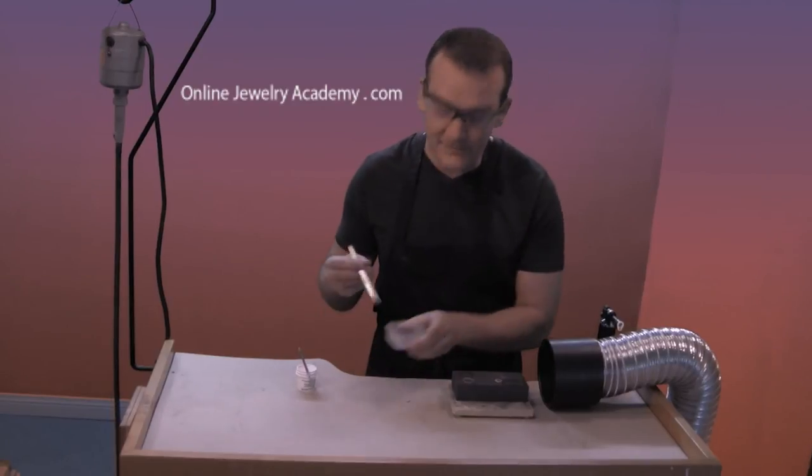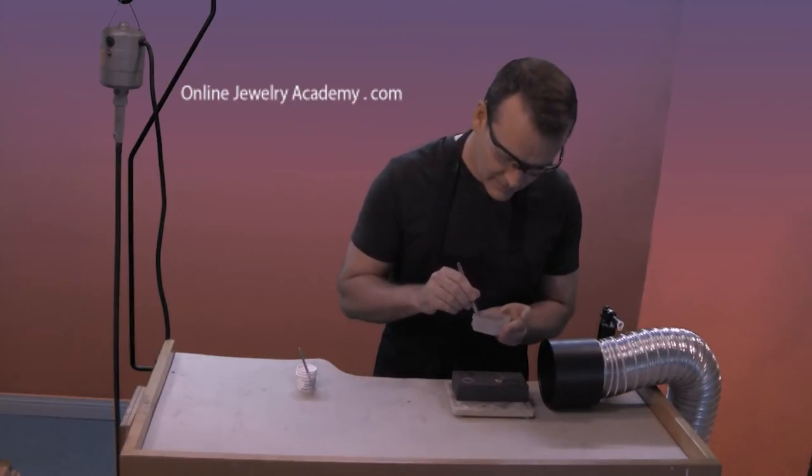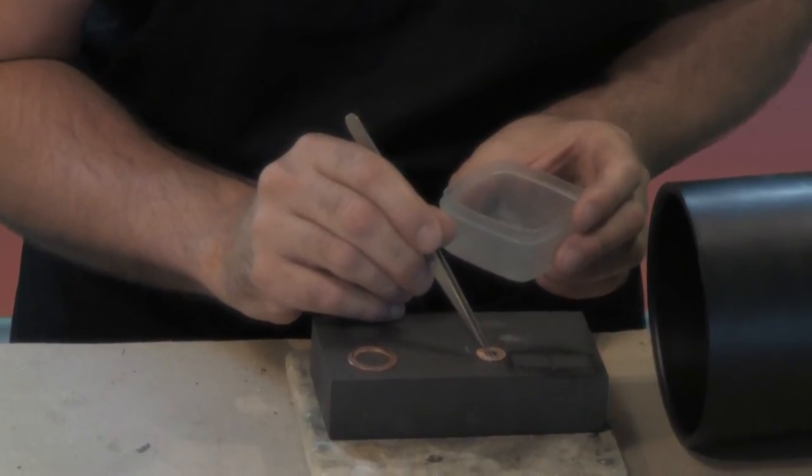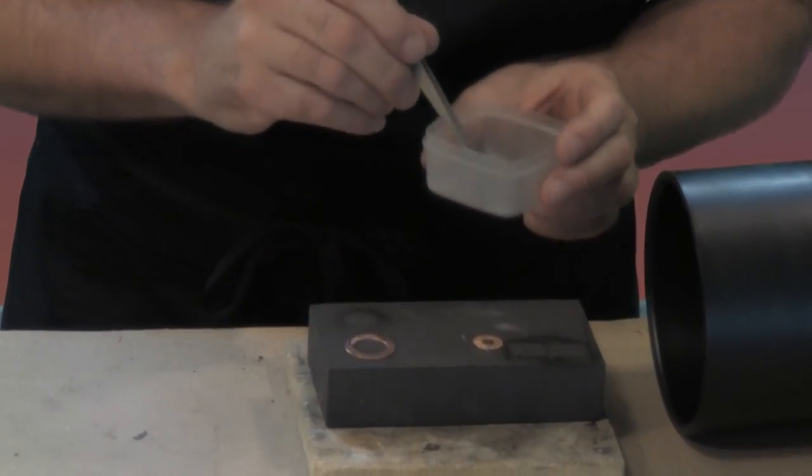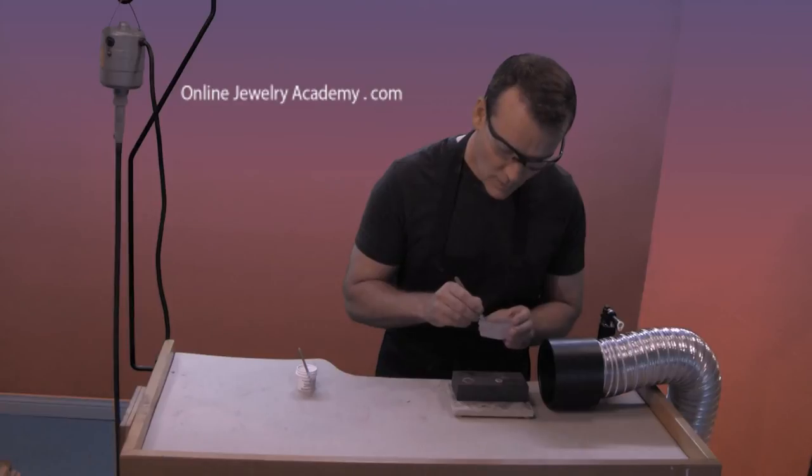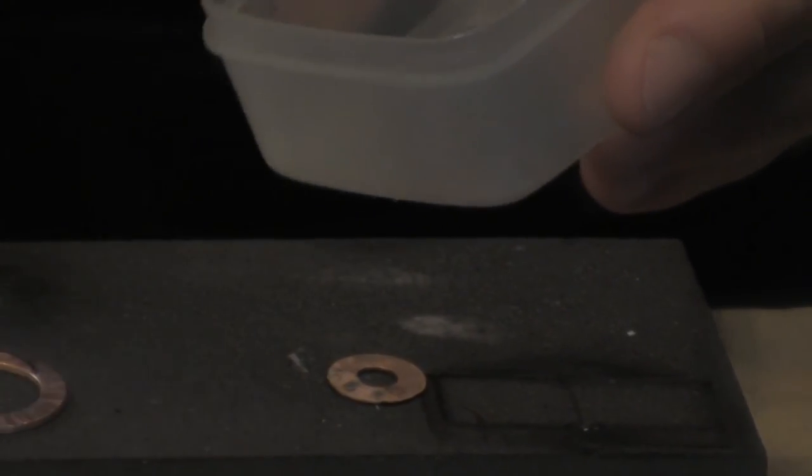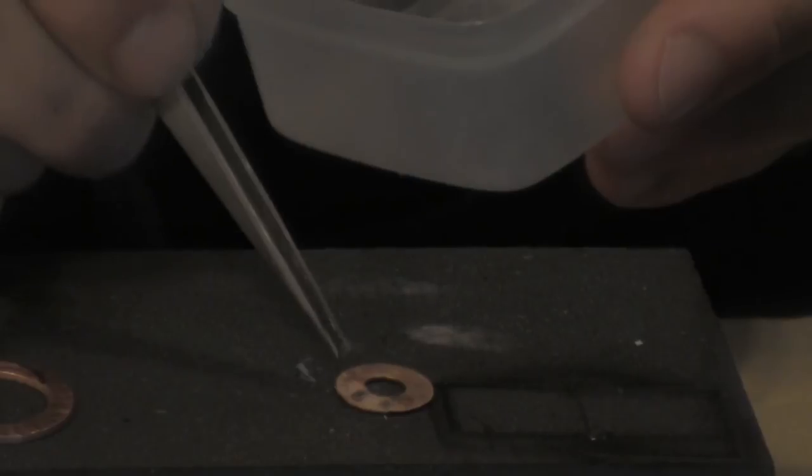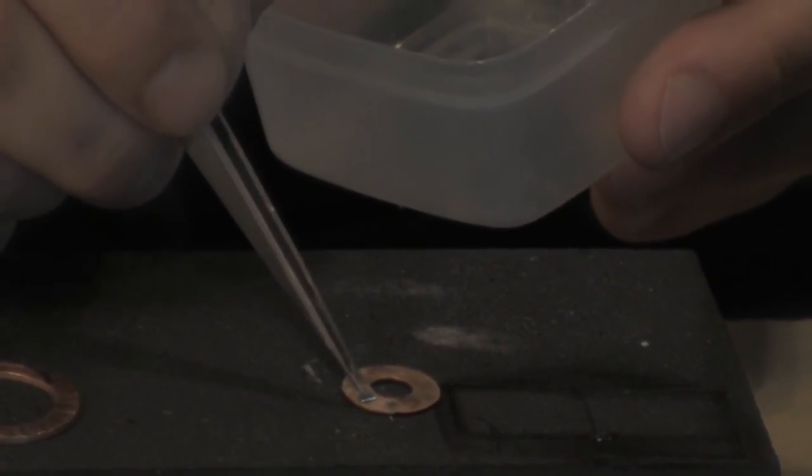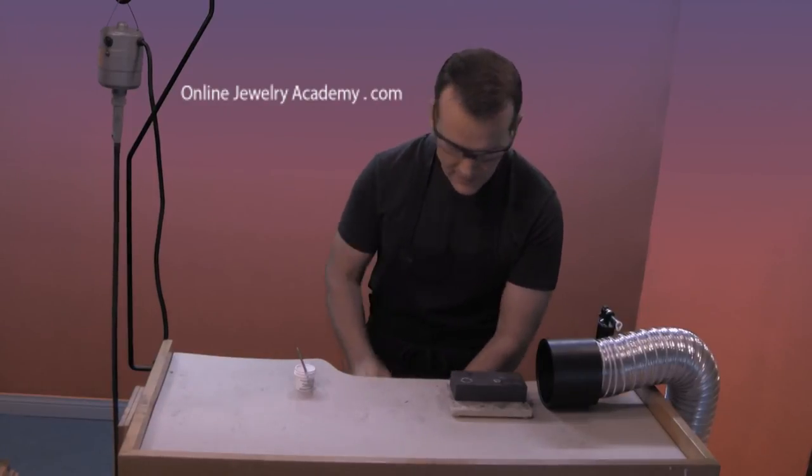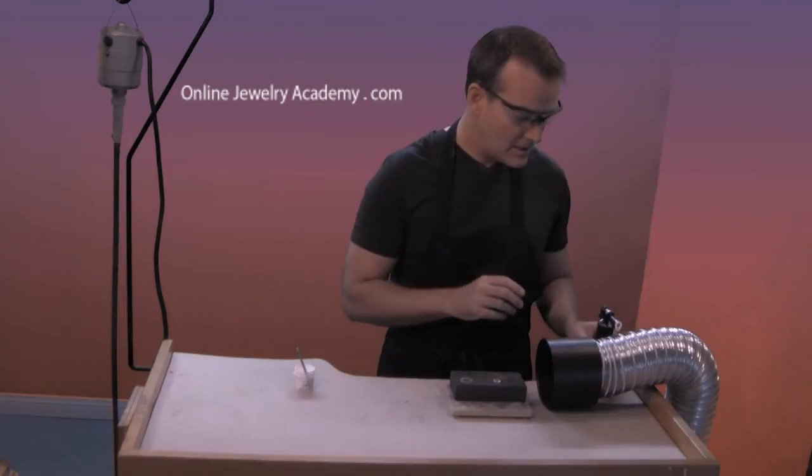Alright, so I've got my flux applied. Now I'm going to apply some pallions of solder. Remember the correct size for a pallion of solder is about one millimeter square. Now I made these a little bit bigger so that they would show up on camera. What you want to do is apply enough pallions in order to cover or flood the surface that you're trying to solder. I've got five pieces of solder that are applied on top of my flux and I just want to melt them.